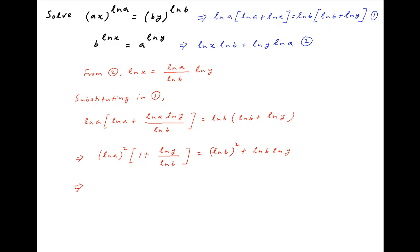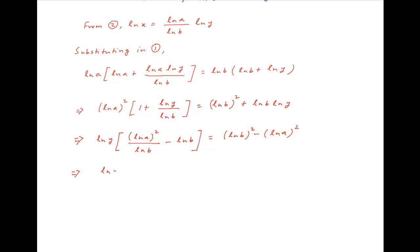Now, collecting all terms involving lnY, we get lnY times lnA whole square upon lnB minus lnB is equal to lnB whole square minus lnA whole square. lnA whole square cancels across the left-hand side and the right-hand side, leaving us with minus 1 on the right-hand side. And therefore, lnY is equal to minus lnB.